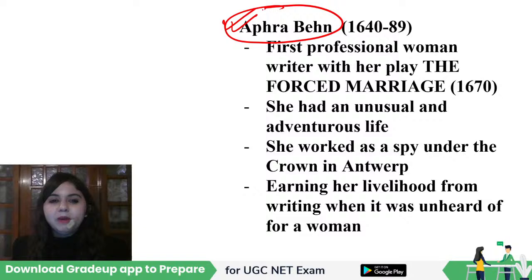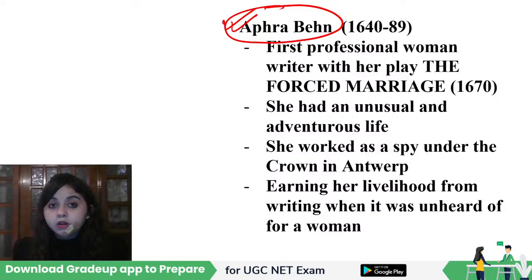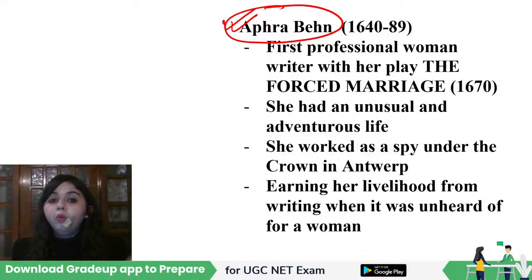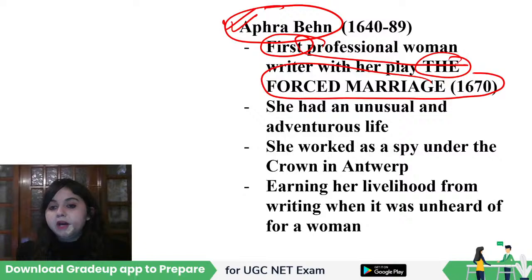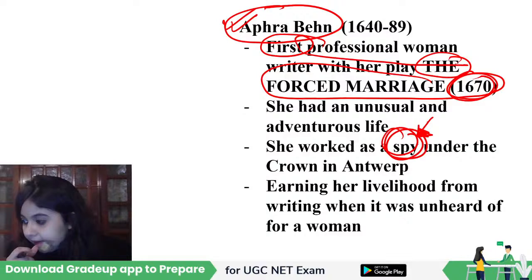Aphra Behn is also an early feminist. Aphra Behn had an unconventional life and was one of the first important professional writers to earn her living. She was a poet at heart, a playwright by profession, and also wrote prose works. The two most important prose works are Oroonoko and Love Letters of a Noble Man to His Sister. She entered the professional writing world with her play The Forced Marriage in 1670. Many people also believe she worked as a spy.